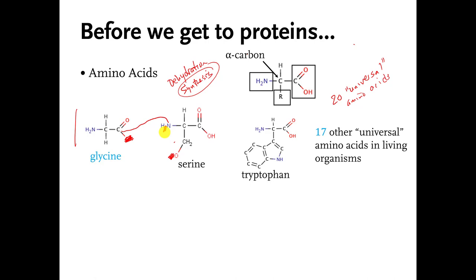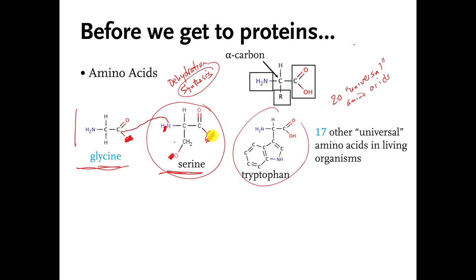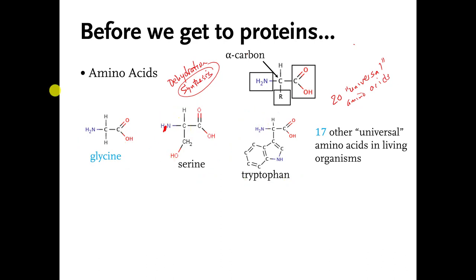If you remember from last week, we already talked about this kind of reaction. This kind of reaction is called dehydration synthesis. It's called dehydration because we ripped out pieces of water from the two molecules. It's called synthesis because we made something bigger. This is the most common way that living organisms connect different amino acid molecules to each other. We could also connect serine to tryptophan the same way.